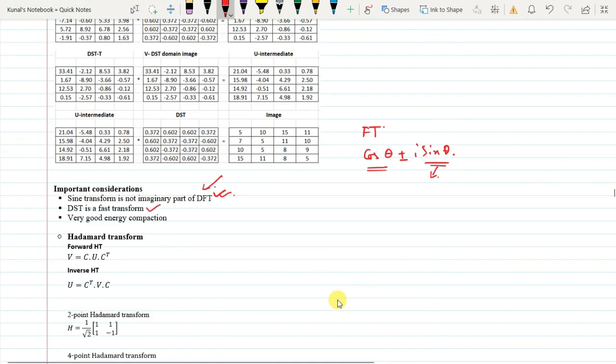DST is a very fast transform, and it has got very good energy compaction. So if you have to reduce the size, it will help you in the reduction of the size and storing the image with much lower space.